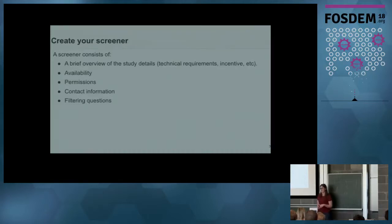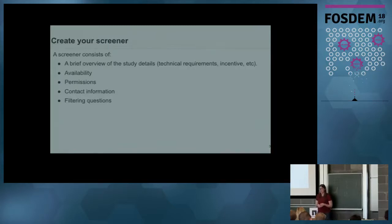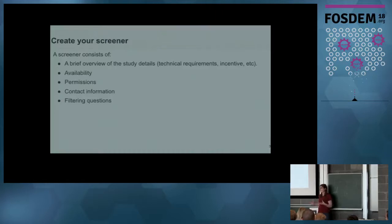You need to collect availability — I typically do this using a multiple choice question, offering a series of time slots that users can tick. At GitLab there are two important questions I ask regarding permissions: first, whether I can record the screen and the conversation; and second, whether I can share that recording publicly. I ask about recording because when I normally conduct a usability testing session I'm the only researcher, which means I'm also the main observer and note-taker, and it's easy to miss something. Being able to record means I can go back and review anything I might have missed, and my colleagues can also watch those videos and witness first-hand the problems users are facing.